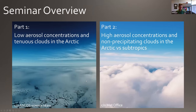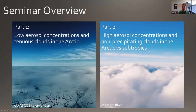So with that brief overview, what I'm going to talk about today can be broken into two parts. In the first part, I'll talk about this low aerosol concentration regime where we're really worried about suppressing precipitation and changing the optical thickness of these tenuous clouds in the Arctic. In part two, I'll shift focus to this higher aerosol concentration regime for non-precipitating clouds, and compare and contrast what's occurring in the Arctic with what's happening in the subtropics.